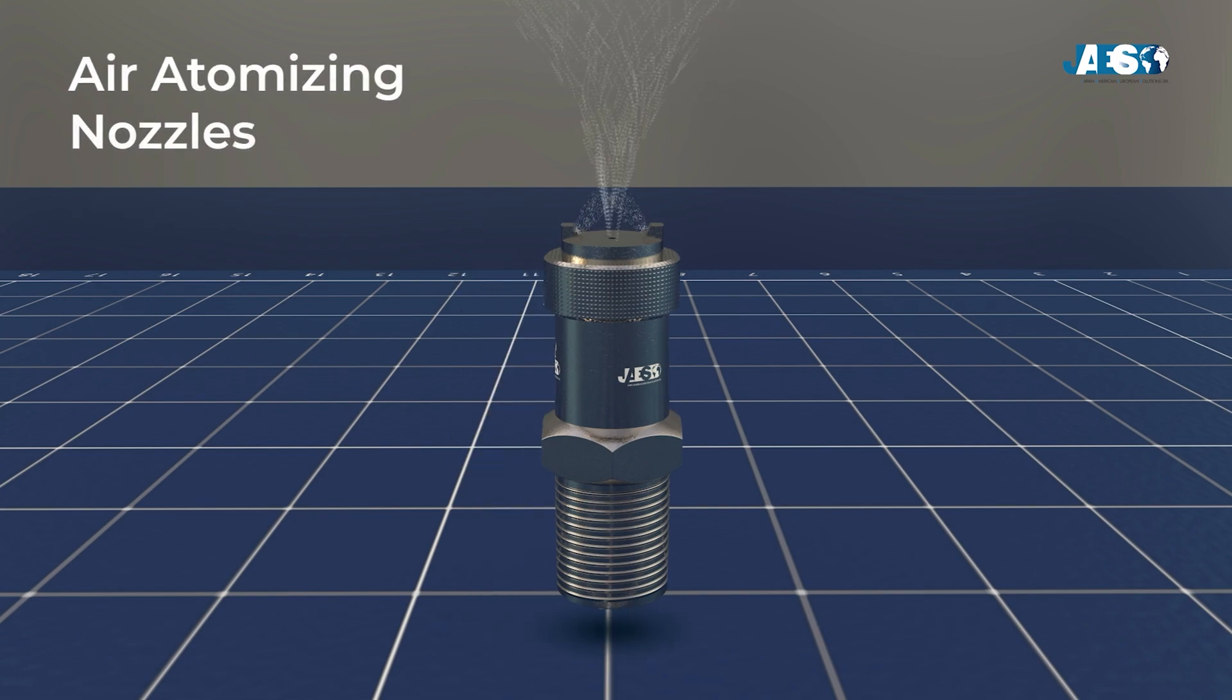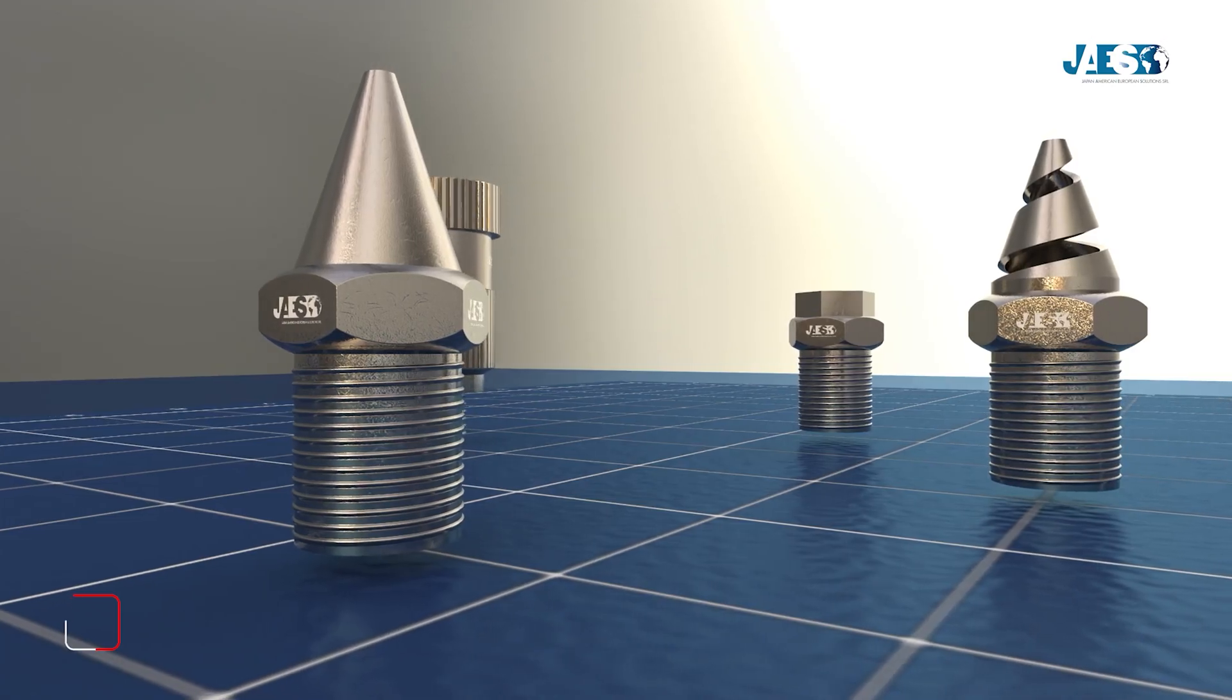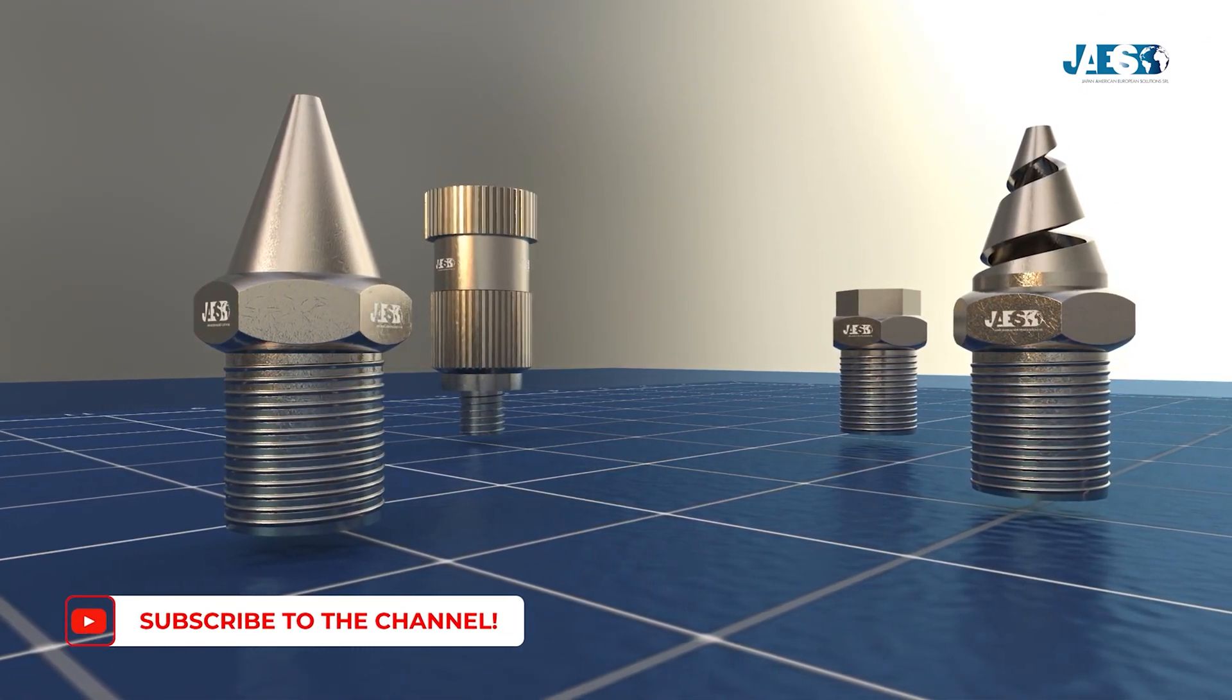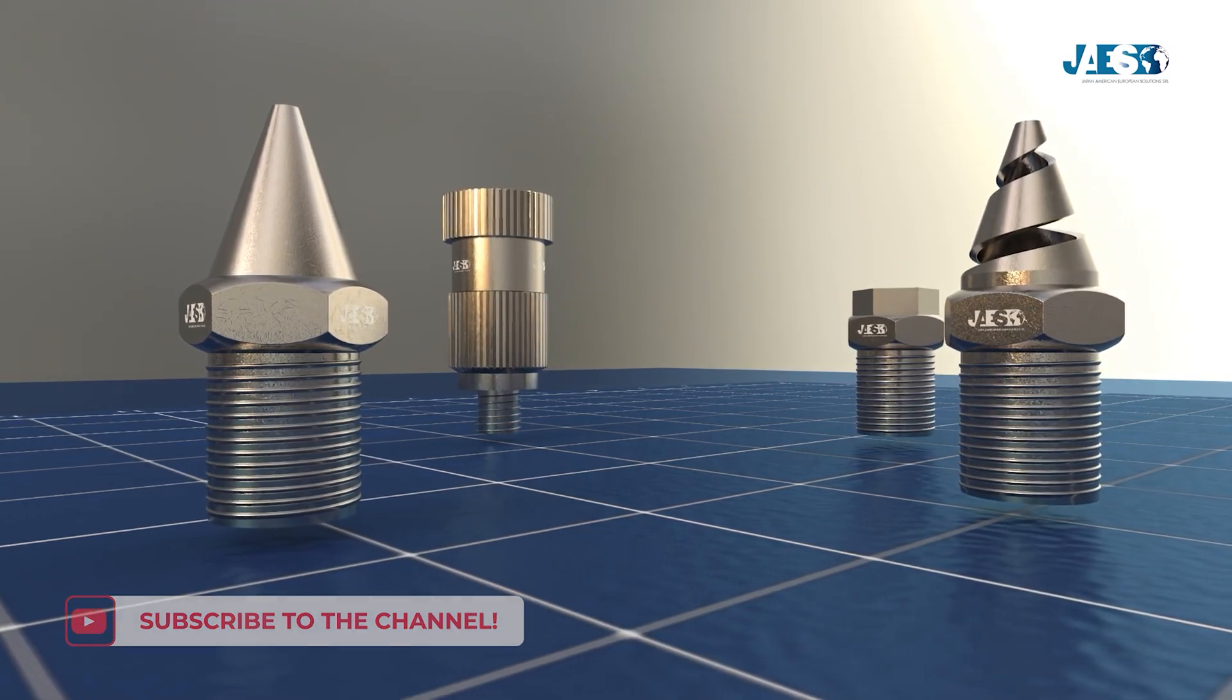Air atomizing nozzles use compressed air for ultrafine mist. They're used in precision coating and high-end painting. The choice of materials for nozzle construction is essential to ensure chemical, mechanical, or thermal resistance depending on application.